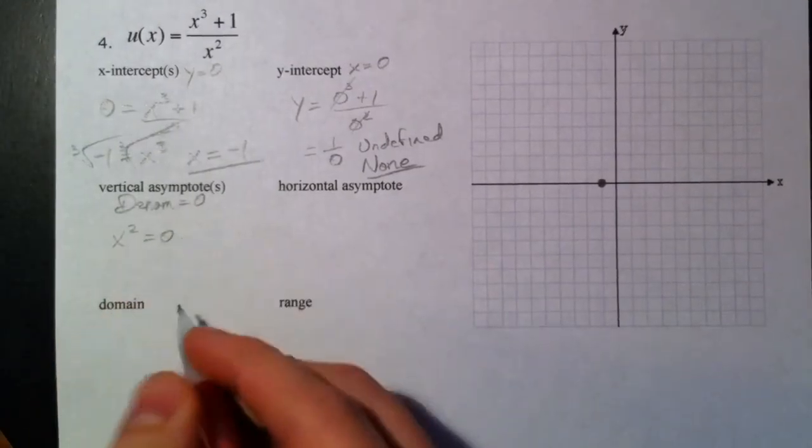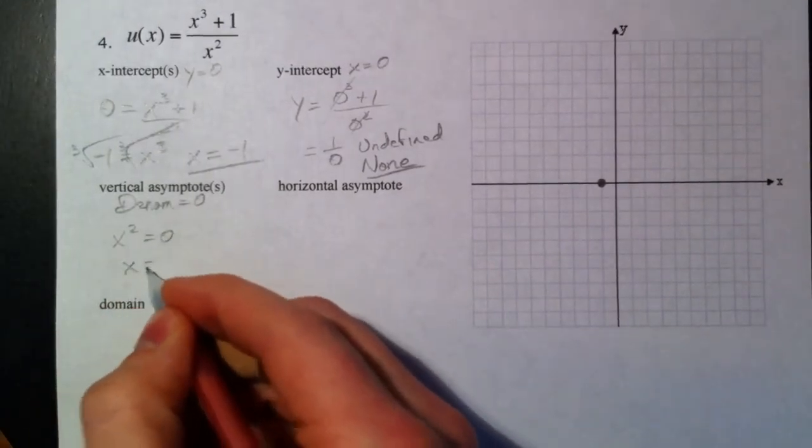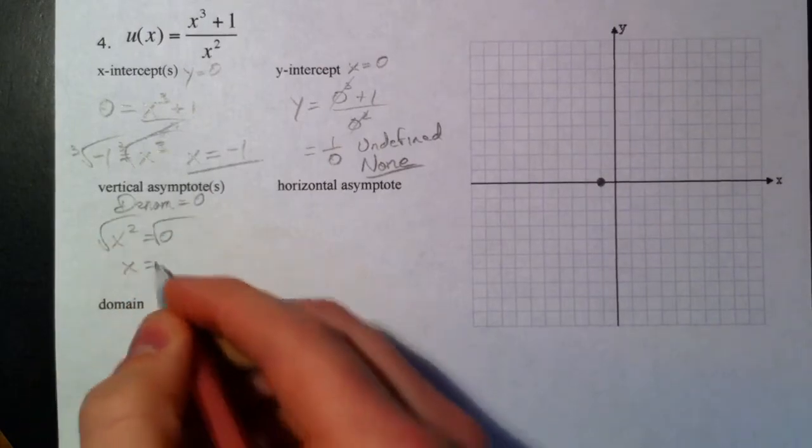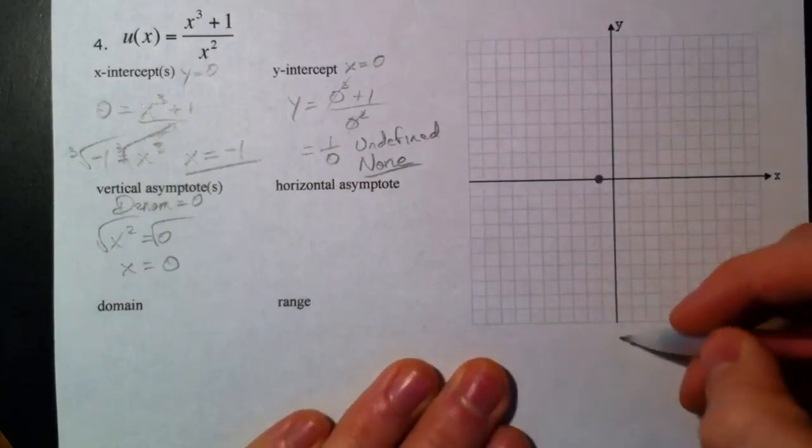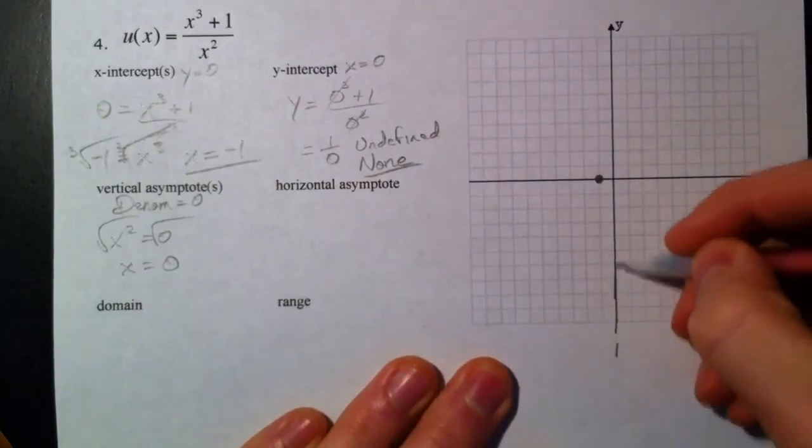Take the square root of both sides - that's where our plus or minus 0 shows up again, but it doesn't matter. So we have a vertical asymptote at 0.